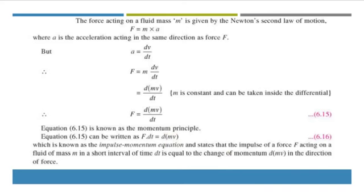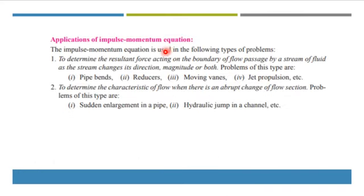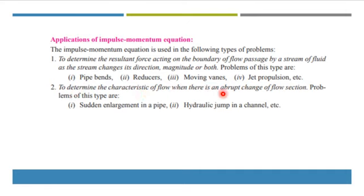The applications of the impulse momentum equation are as follows. First, to determine the resultant force acting on the boundary of a flow passage by a stream of fluid as the stream changes its direction, magnitude, or both. Problems of this type include pipe bends, reducers, moving vanes, and jet propulsions. Second, to determine the characteristics of flow when there is an abrupt change of flow section, such as sudden enlargement in a pipe or a hydraulic jump in a channel.